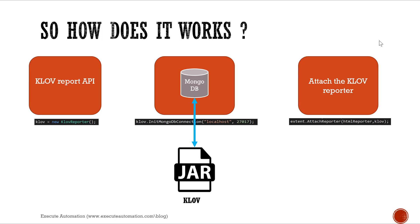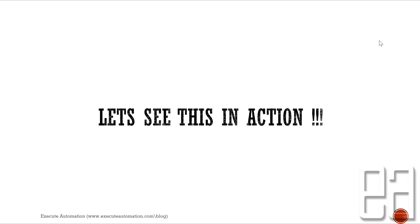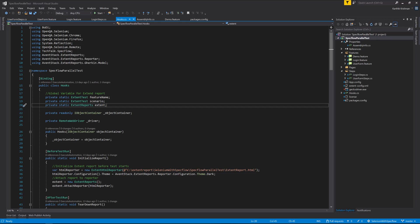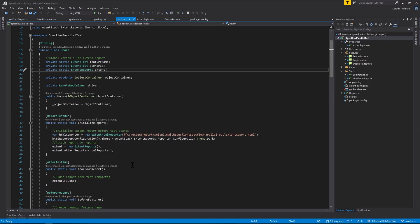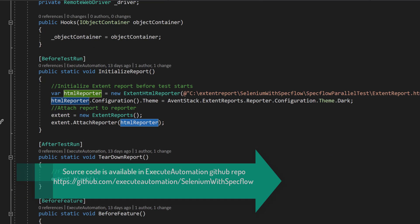We need to start a JAR file which is the CLO server. The CLO server acts as an intermediary between the MongoDB database and the requests we access from the web browser. Once we access the CLO report from localhost, it automatically generates a report that looks similar to the extent report but is a historical report. We'll be discussing everything in action. I'm going to flip to Visual Studio — this is the same code we've been discussing throughout our mini series.